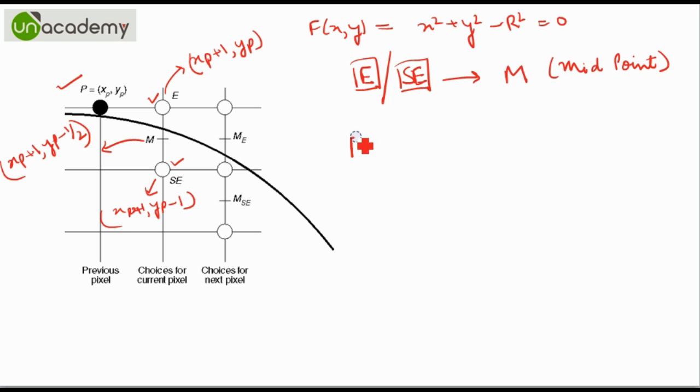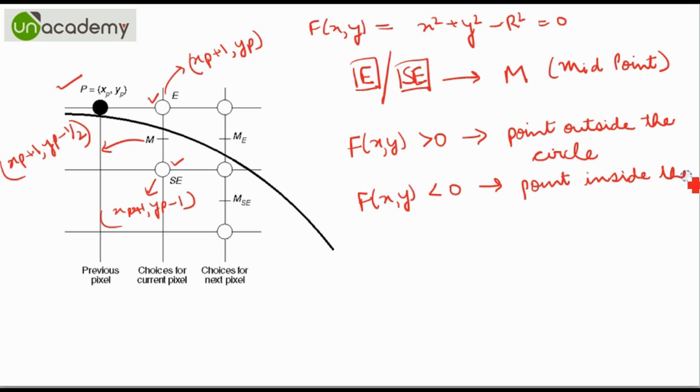So if this function F of X, Y evaluates to greater than zero for any point, this implies that point is outside the circle.